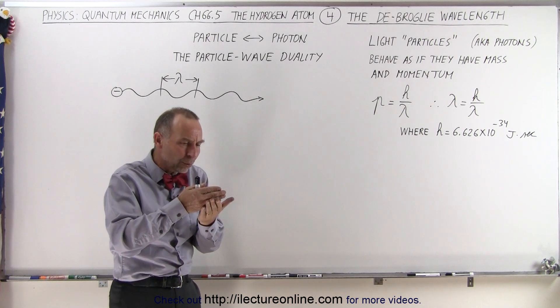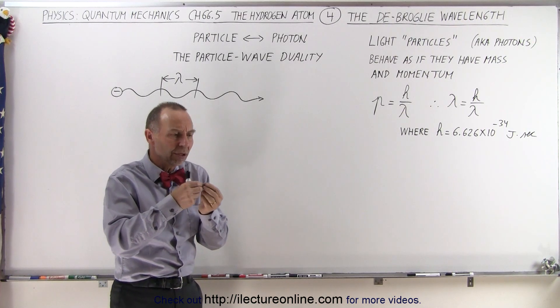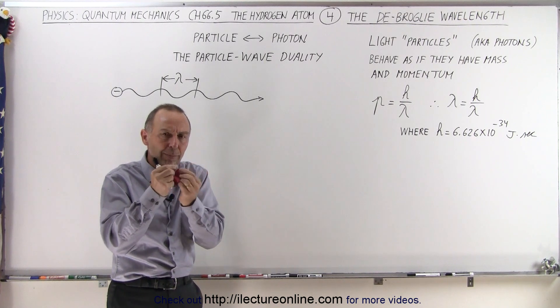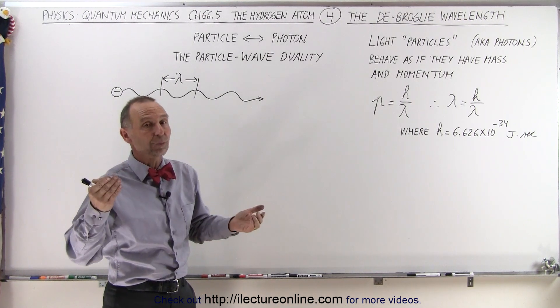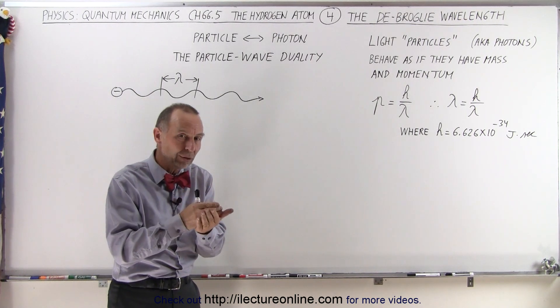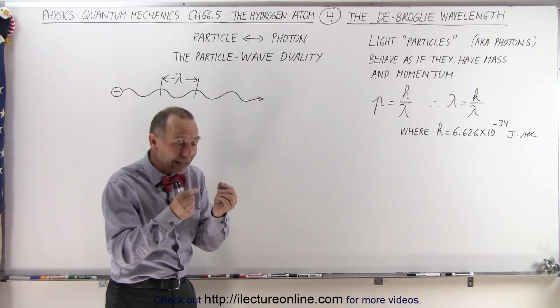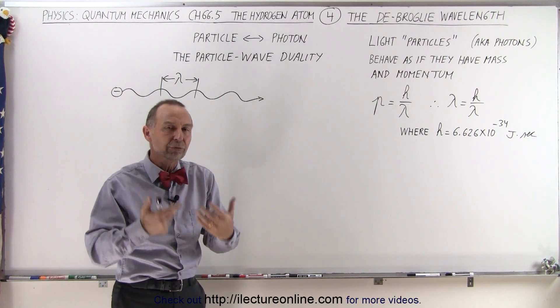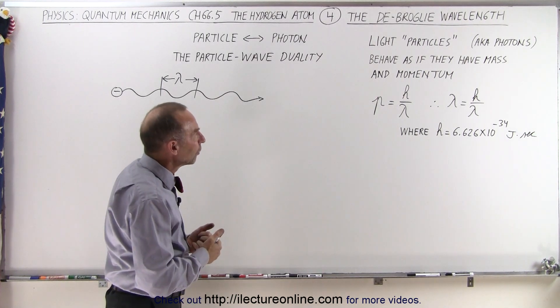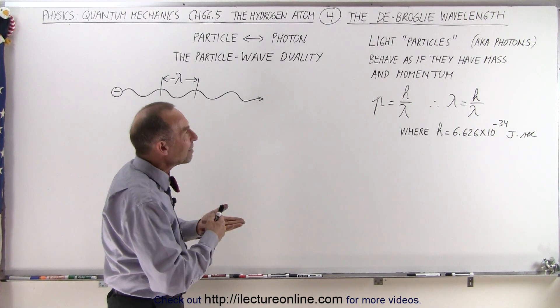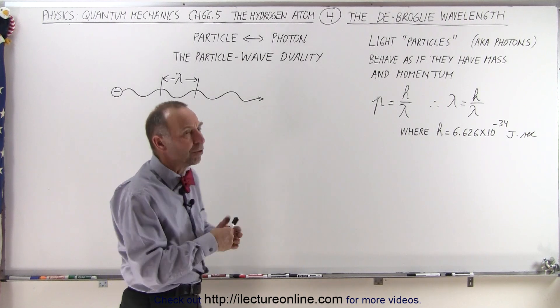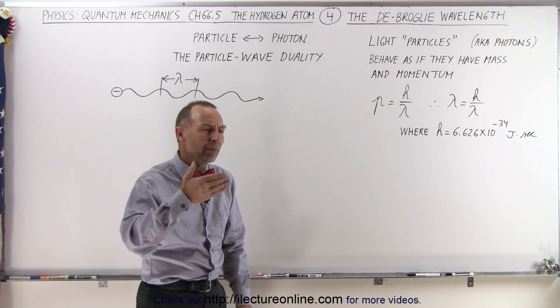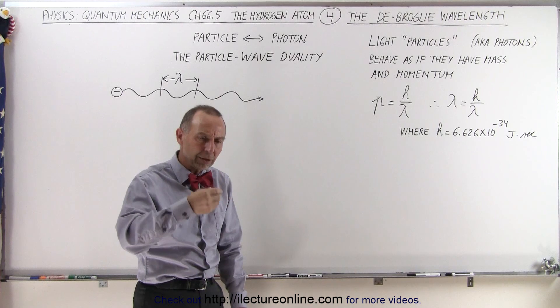They began to see that light or electromagnetic radiation acted like individual little particles. As a matter of fact, Einstein received the Nobel Prize for proving through the photoelectric effect that light behaved like little pieces of light called photons. So light behaved kind of like particles.